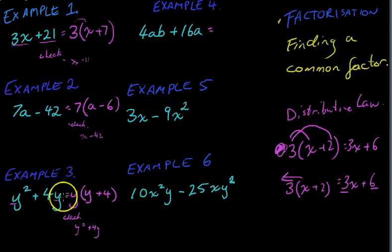This one, 4ab plus 16a. Now, you need to be really careful once we start getting into these more complicated ones because there's a common factor. You can see the 4 and the 16. So, there's a common factor of 4. But there's also a common factor of a. You can see there's an a in both of them. So, the common factor here is 4a. Then, we go through it the same as usual. 4a times what makes 4ab? It's going to be b. And 4a times what makes 16a? 4a times 4.